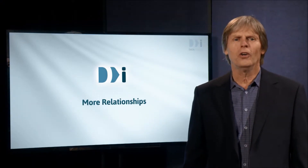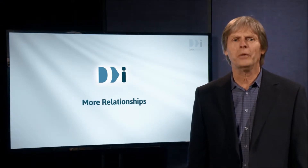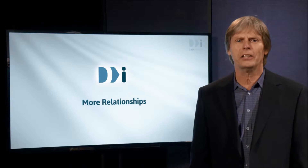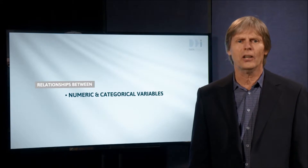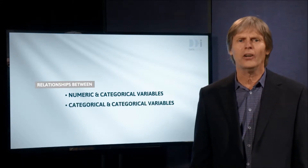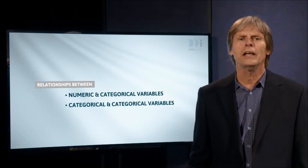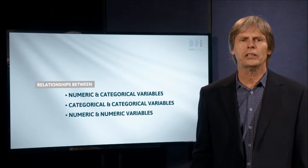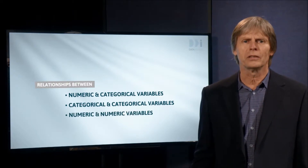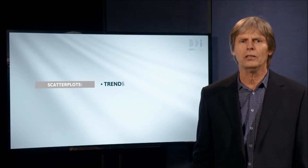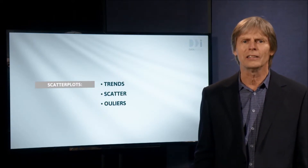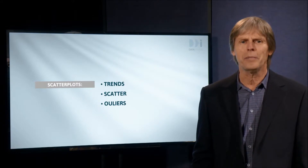Hello, welcome to week four. Last week we started talking about relationships between variables and how we can use them. We've looked at relationships between numeric and categorical variables, between categorical and categorical variables, and then we began on relationships between numeric variables. Our last video stressed looking at scatter plots in terms of trends, scatter and outliers, and using these ideas to make predictions.